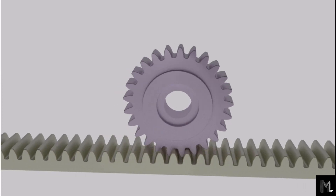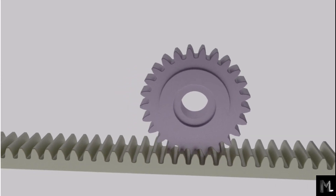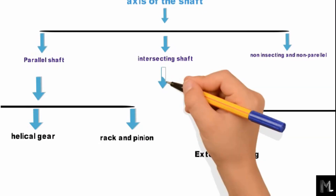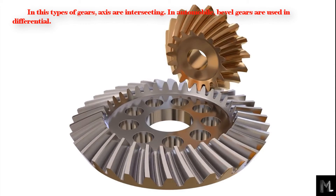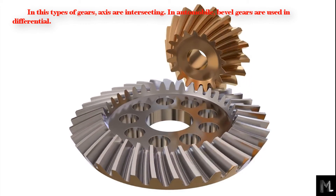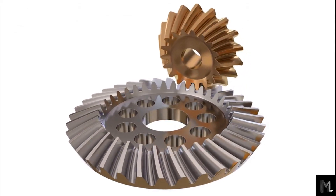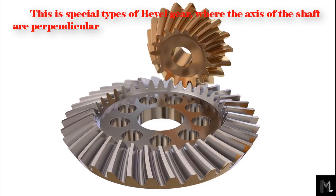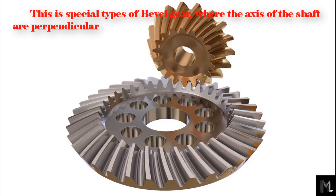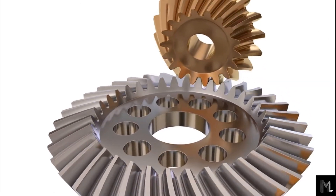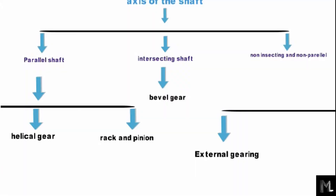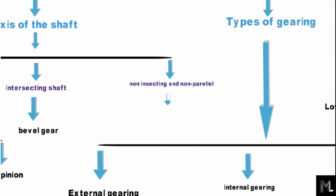In intersecting shaft gears, the axes are intersecting. In automobiles, bevel gears are used in differentials. If the pinion and gear of a bevel gear are the same size, then this gear drive is called a miter gear. The third classification is non-parallel and non-intersecting gears.